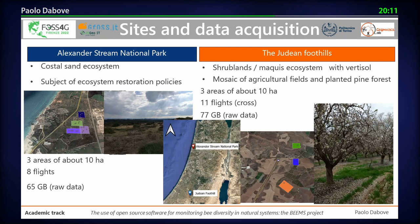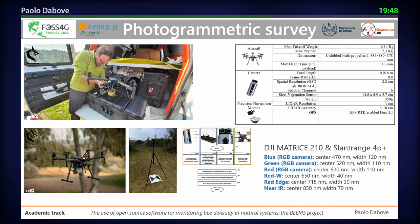The almond trees are really important because bees can be found over them for pollination. In this second area we selected three patches again, with comparable extension, performed 11 flights, and collected 77 gigabytes of raw data. These data were collected using traditional — not low-cost — instruments, because the idea was to first use typical tools available on the market and then perform a downscaling approach toward a low-cost solution.